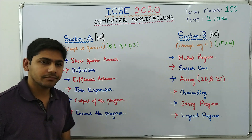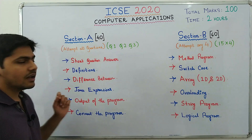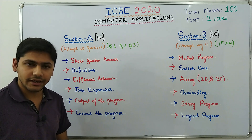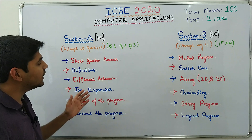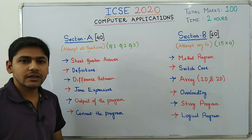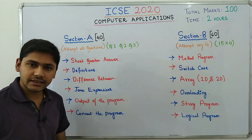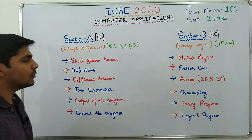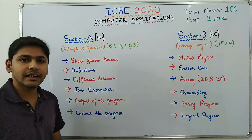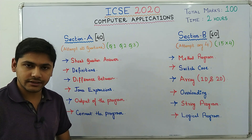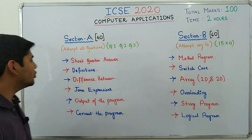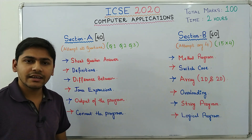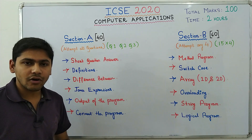Let's begin with Section A, which is 40 marks. This section is compulsory, meaning you will have to attempt all the questions. You will get question 1, question 2, and question 3. Question 1 and question 2 will be of 10 marks each and question 3 will be of 20 marks. All the questions in Section A will be theoretical type and short questions. You will get short question answers — questions like 'state the data type,' 'what are literals,' and similar.